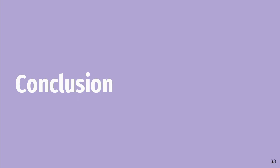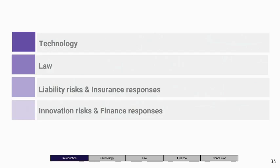In conclusion, we briefly introduced what machine learning and deep learning are, covered the liability risks associated with those algorithms and how the insurance industry will respond to whatever the law decides, and talked about innovation risks and how the financial industry shares those risks with startups developing these algorithms. We will see what happens in the future. This is a really exciting field. Thank you.